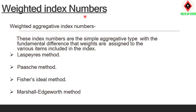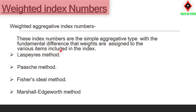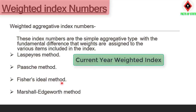Weighted index numbers: These are the simple aggregate type with the fundamental difference that weights are assigned to the various items calculated in the index. Four methods under weighted index numbers: Laspeyres method (1871), Paasche method, Fisher Ideal Index, and Marshall-Edgeworth. These four methods will be used for weighted index numbers.